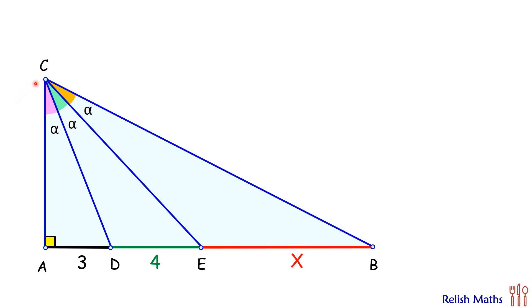Let's start by assuming the length CA as h centimeters. Now in this triangle CAD, the value of tan α will be perpendicular, that is AD upon base, or we can say that tan α is 3 upon h.